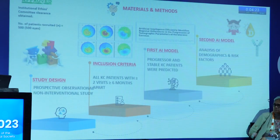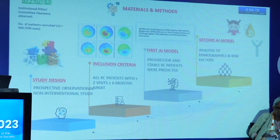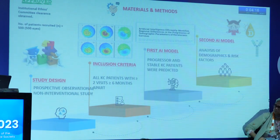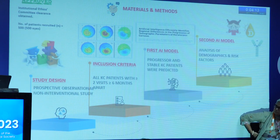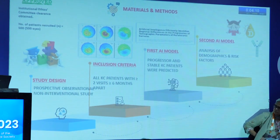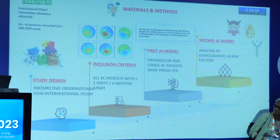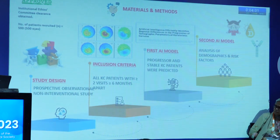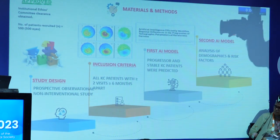In our materials and methods, after ethics committee approval, we recruited 500 eyes in a prospective observational study. All keratoconic patients had two visits six months apart. The first AI model indicated whether the patient was a progressor or non-progressor based on topographic features, and our second AI model aimed at analyzing these alongside demographic factors and risk factors.